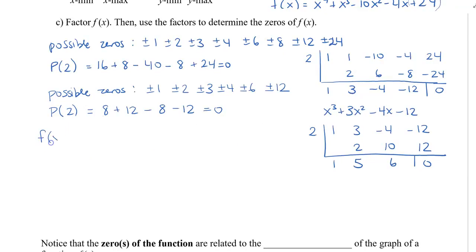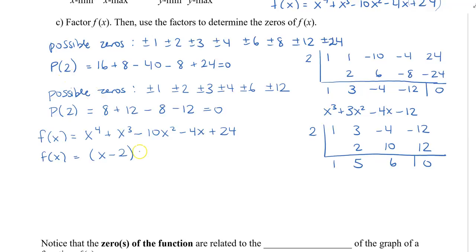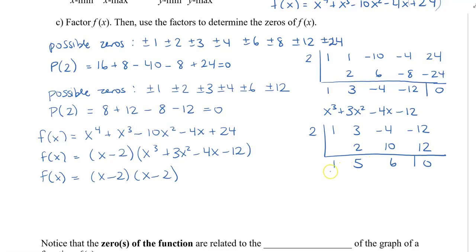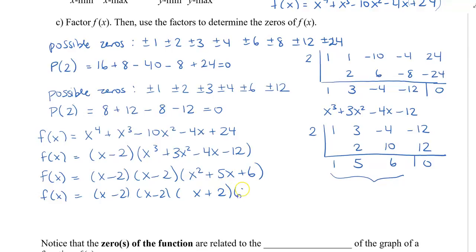Let me recap. I started off with f of x equal to x to the 4 plus x cubed minus 10x squared minus 4x plus 24. The first zero I found was 2, so x minus 2 is a factor. Dividing by x minus 2 using synthetic division gave me x cubed plus 3x squared minus 4x minus 12. Factoring again found another x minus 2 as a factor, and synthetic division gives the next polynomial x squared plus 5x plus 6. Factoring this quadratic gives x plus 2 and x plus 3.